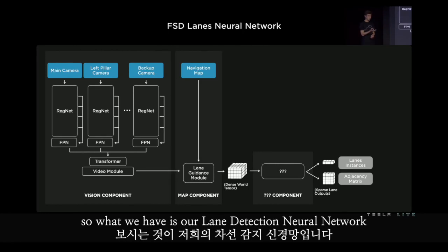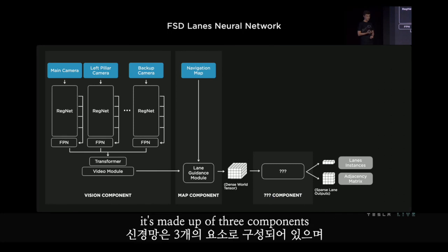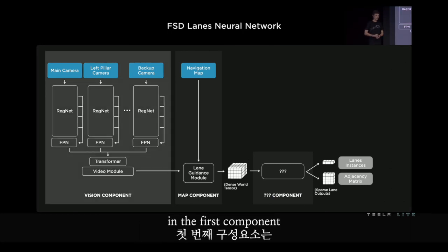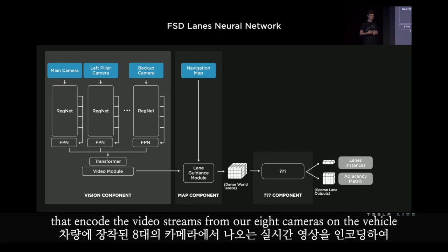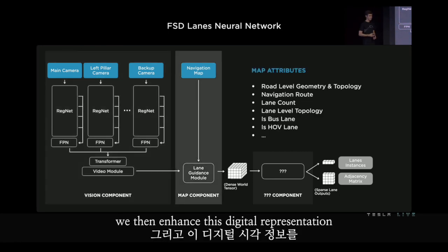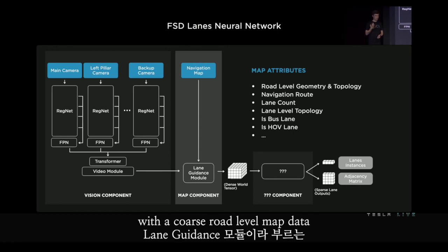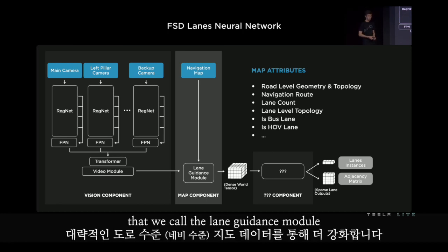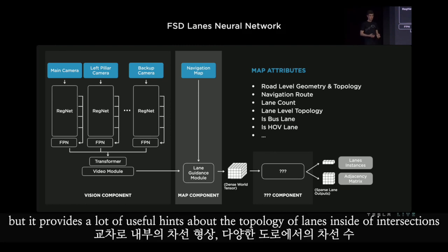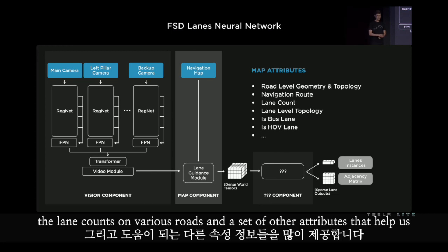Our lane detection neural network is made up of three components. In the first component, we have convolutional layers, attention layers, and other neural network layers that encode the video streams from our eight cameras on the vehicle and produce a rich visual representation. We then enhance this with coarse road-level map data, encoded with additional neural network layers we call the lane guidance module. This map is not an HD map, but it provides useful hints about the topology of lanes inside intersections, lane counts on various roads, and other attributes.